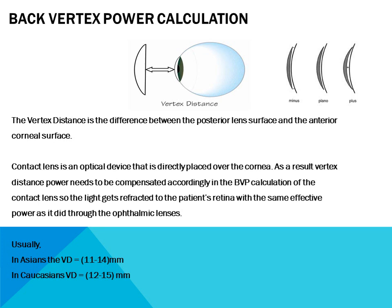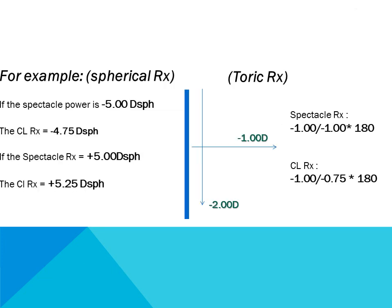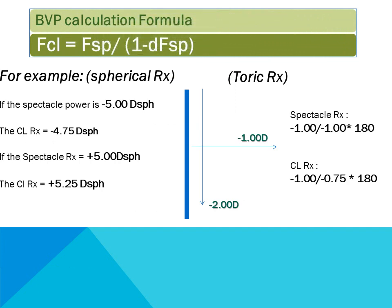The formula for contact lens power calculation is: FCL = FSP / (1 − D × FSP), where FCL is the contact lens power, FSP is the spherical spectacle power, and D is the back vertex distance. For example, if the patient has a spectacle power of −5.00 D spherical, the contact lens power will be −4.75 D spherical. If the spectacle power is +5.00 D, the contact lens power will be +5.25 D spherical.